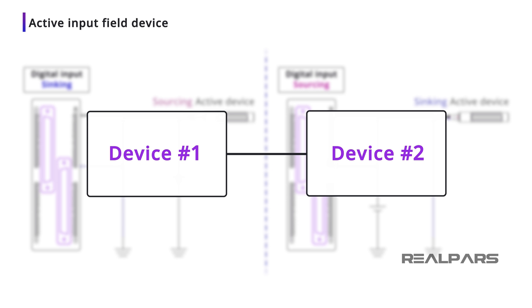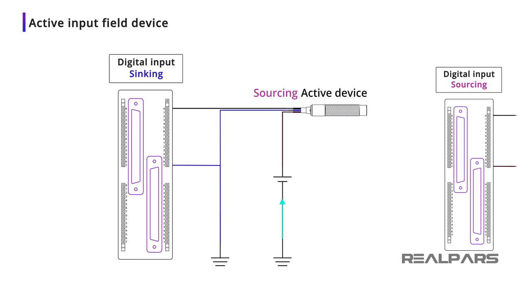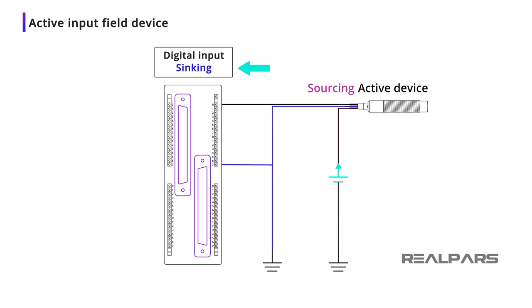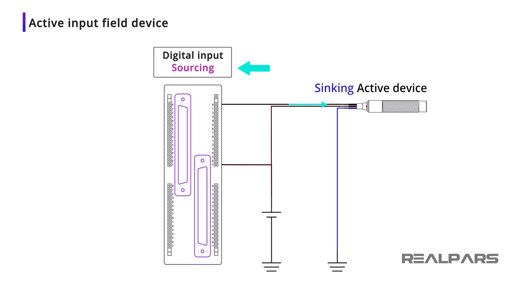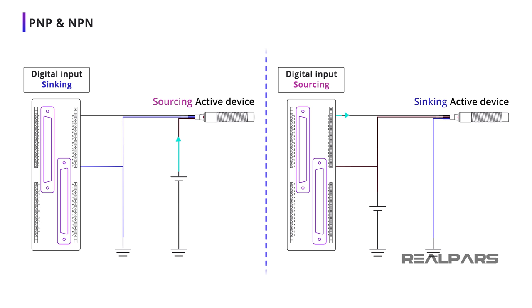Earlier we said that when there are two devices with current flowing between them, one device will be sourcing and one will be sinking. If the input device is a sourcing type, the PLC input module must be a sinking type. If the input device is a sinking type, the PLC input module must be a sourcing type. Adding to the confusion, some vendors refer to sinking and sourcing input devices as NPN and PNP. You can learn more about NPN and PNP in our other videos.